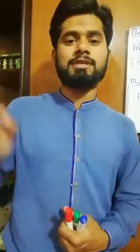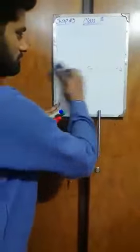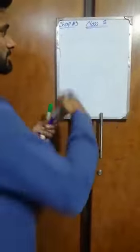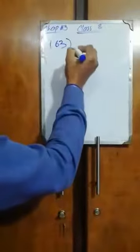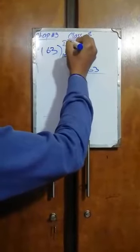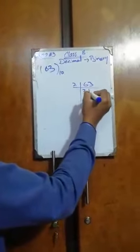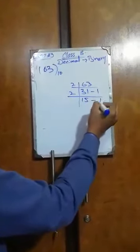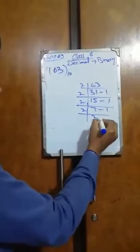We keep dividing and write down the remainders in order. For binary, we should only have 0 and 1 as remainders since the base is 2. For example, converting a decimal number to binary: 2 times 3 is 6, 2 times 1 is 2 remainder 1; 2 times 15 is 30 remainder 1; 2 times 7 is 14 remainder 1; 2 times 3 is 6 remainder 1.